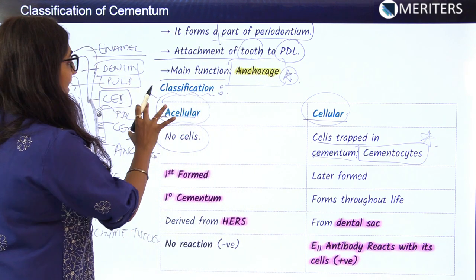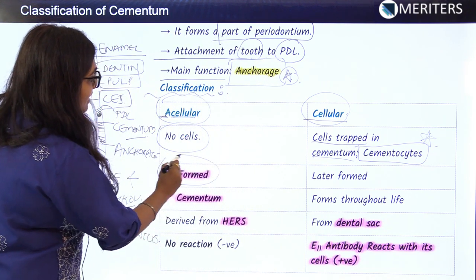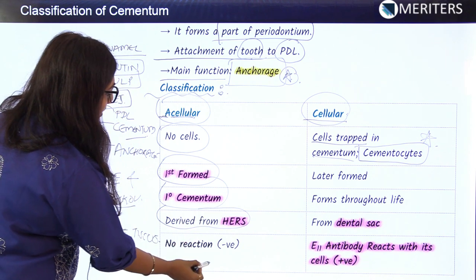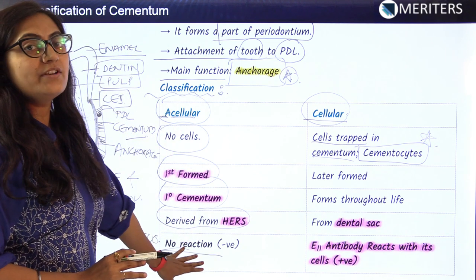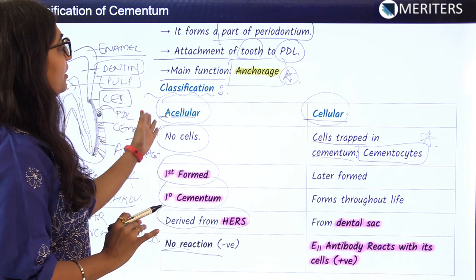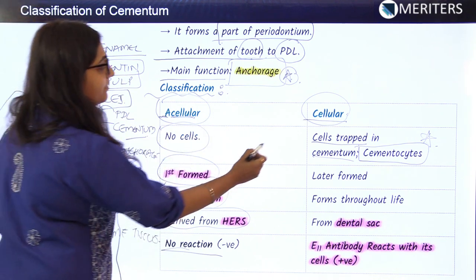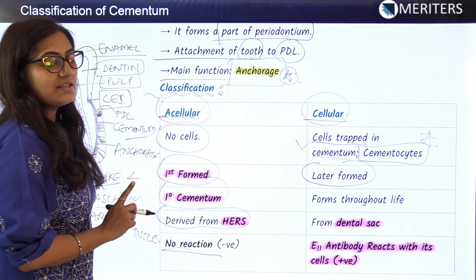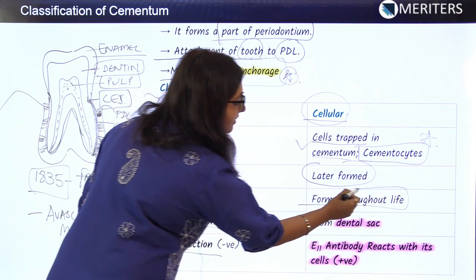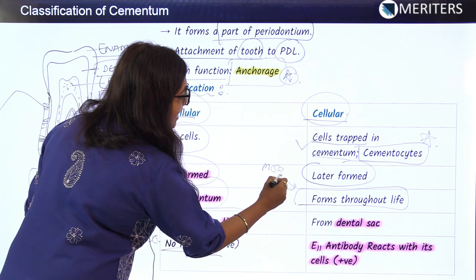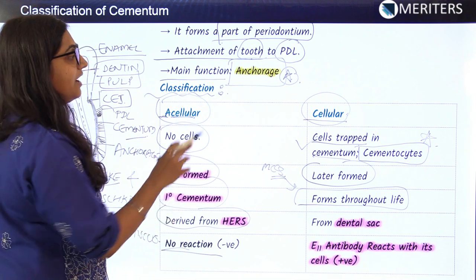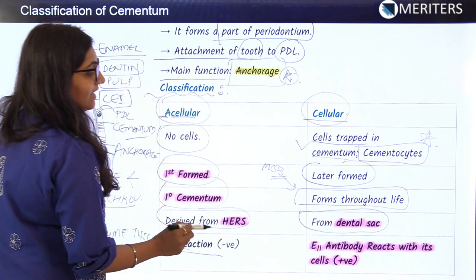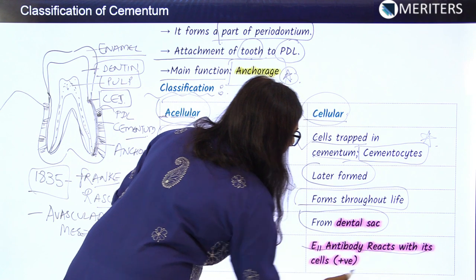Acellular cementum is the first-formed cementum, also known as primary cementum. It is derived from Hertwig's root epithelial sheath, and there is no cellular reaction. Cellular cementum, by contrast, contains cementocytes and is formed throughout life — remember this for MCQs. Cellular cementum develops from the dental sac, and the E11 antibody reacts with its cells.